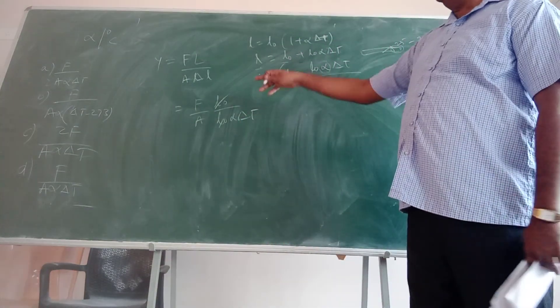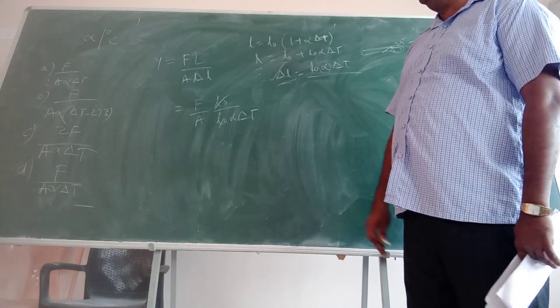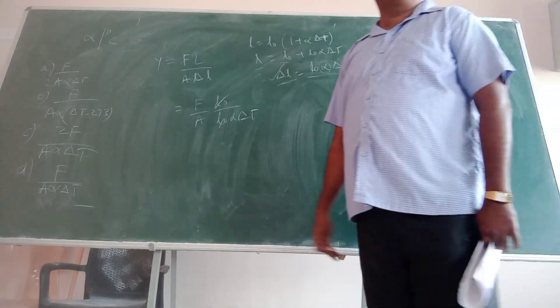That is what we have to do. That is Y equals F by A alpha delta T. Option 4.